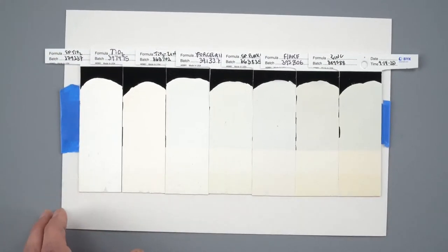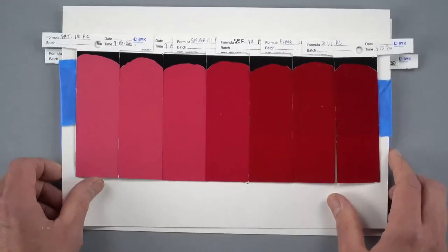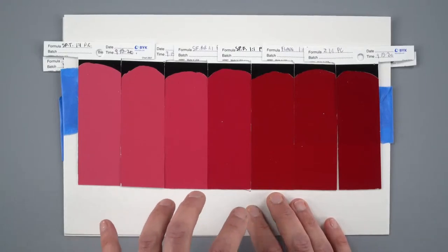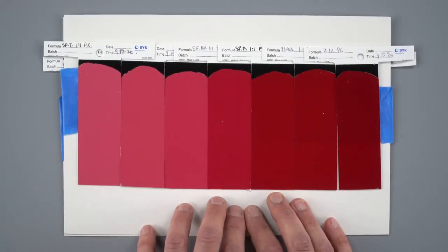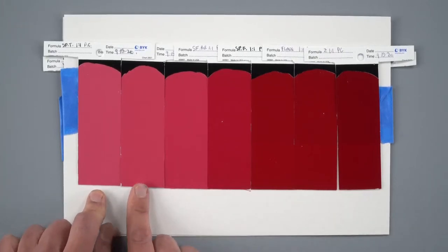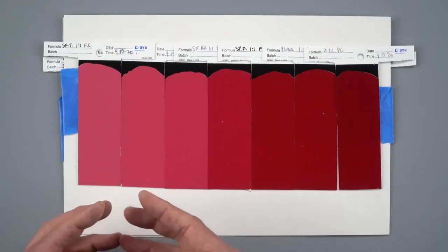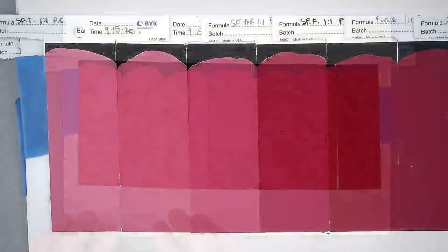So let's look at a couple mixtures that we have with permanent crimson. These are one-to-one mixtures, one part paint to one part white. So you can see over here on the left, this is the safflower titanium and the regular titanium. These colors have the most sort of chalky, strongest tinting strength of the white, and they become the most obvious bright pink of the group. The safflower, and these are one-to-one by eye, they're not weighed out or anything like that.